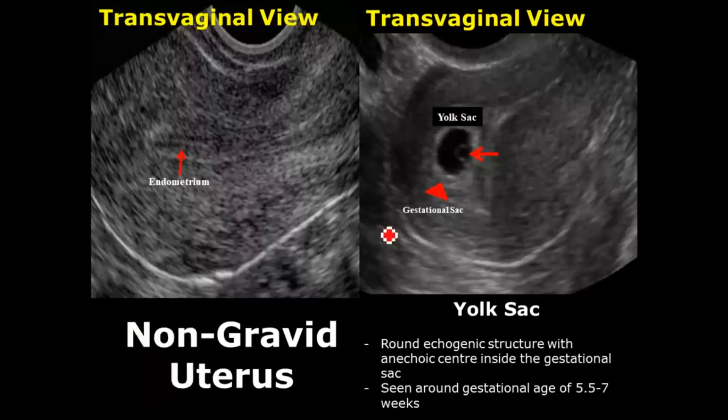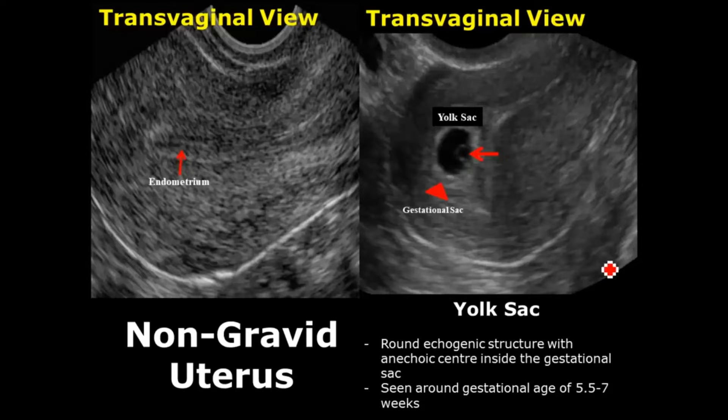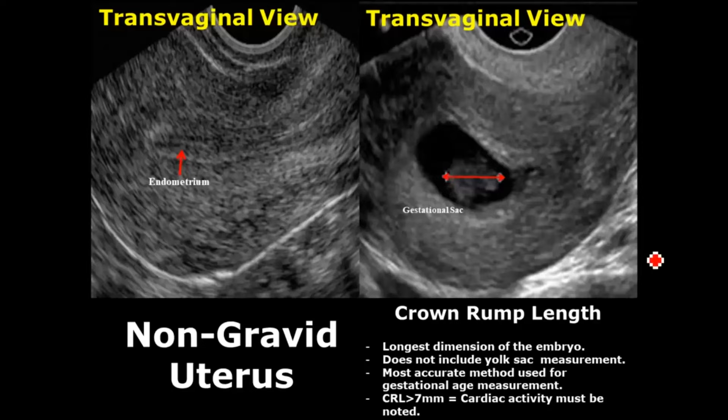The yolk sac is the first structure visualized in the gestational sac. It is an echogenic structure with an echoic center and is usually seen around the gestational age of 5.5 to 7 weeks. The crown-rump length is the longest dimension of the embryo and is the most accurate method used for measuring gestational age. It is measured by placing one caliper on the head of the embryo and the other caliper on the end of the body.